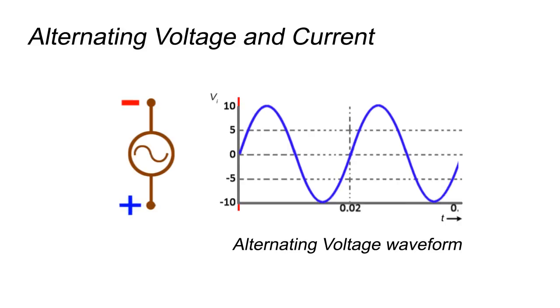This shows that voltage increases in one direction, achieves positive maximum amplitude, and decreases to zero.